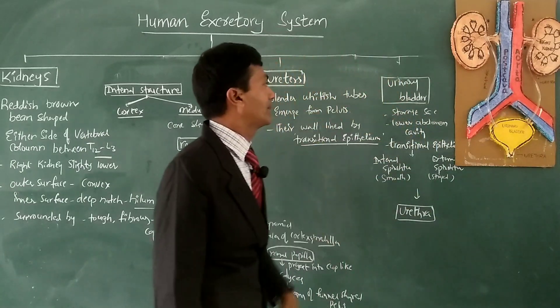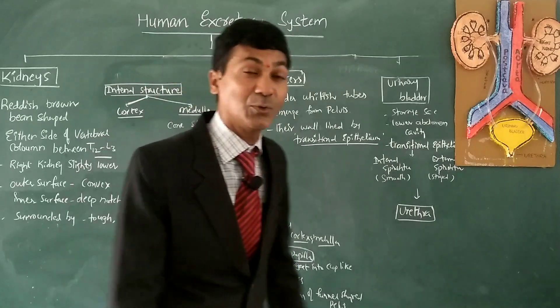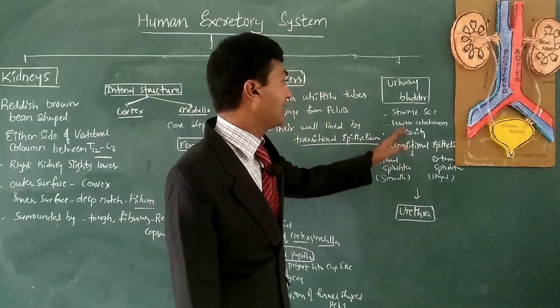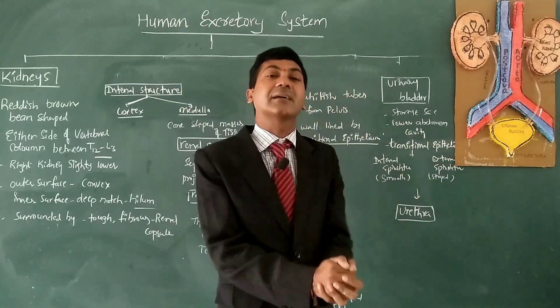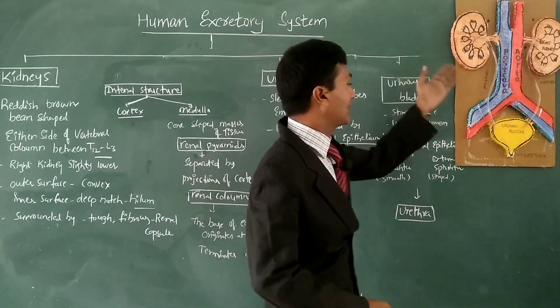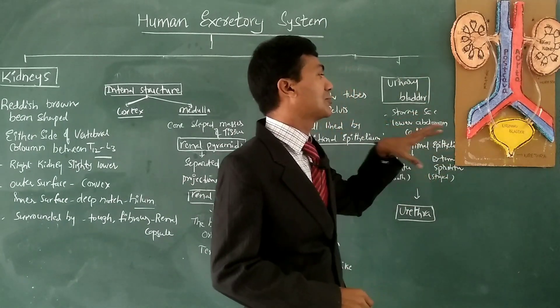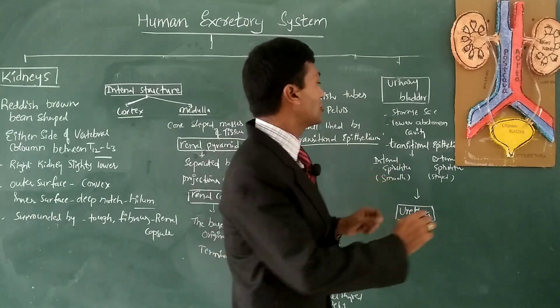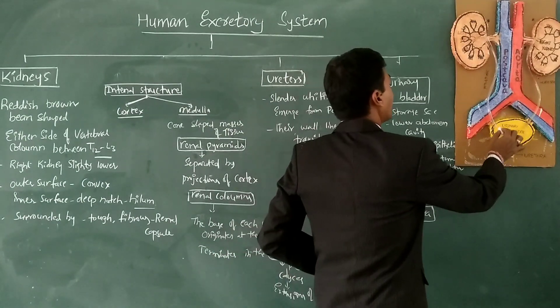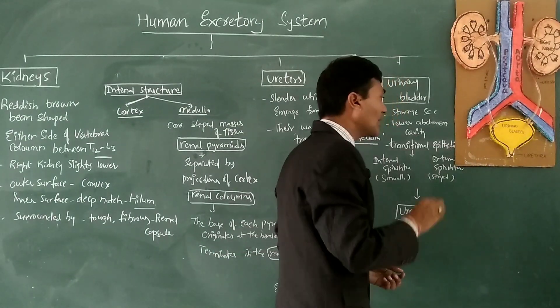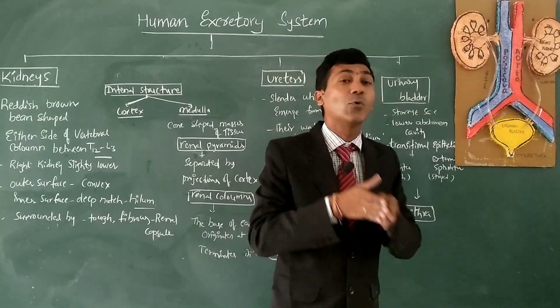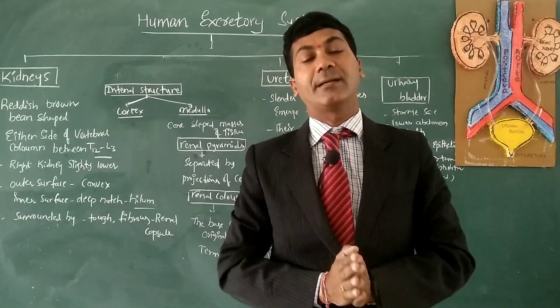The next part is the urinary bladder, which is a storage sac for urine. It is also lined with transitional epithelium, and its neck leads into the urethra.